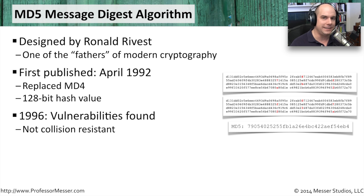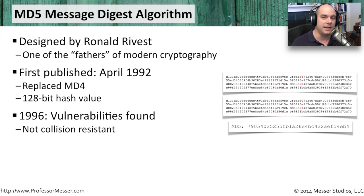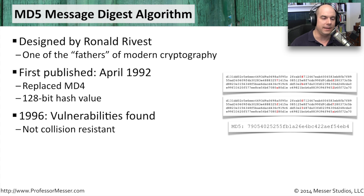In 1996, however, there was a discovery of a number of collisions found with MD5. One of the biggest challenges for hash algorithms is making sure that two separate pieces of information cannot end up creating the exact same hash. That's called a collision, and in the world of hashing, that's a bad idea.